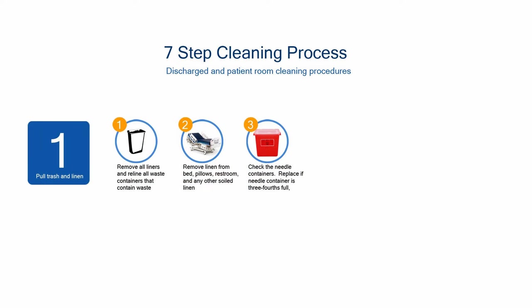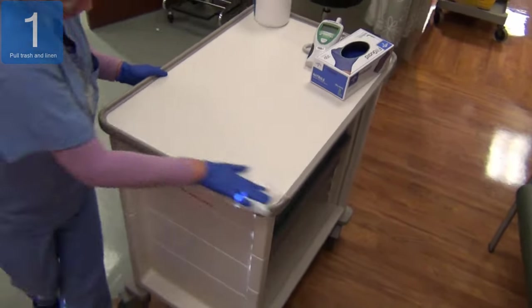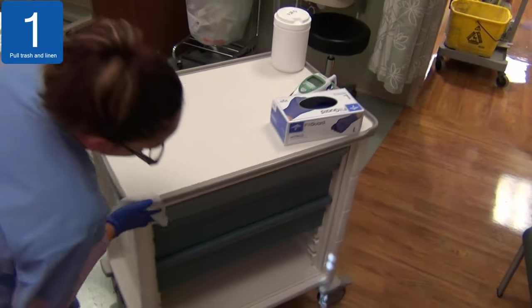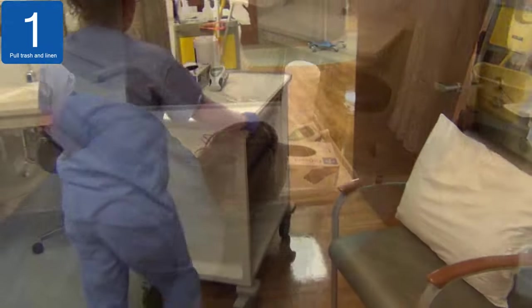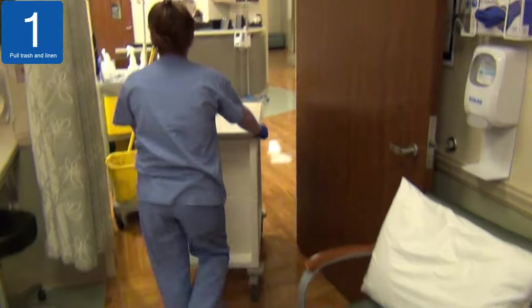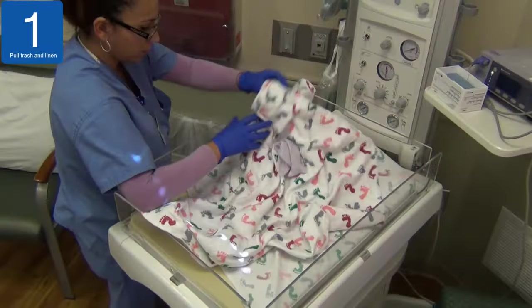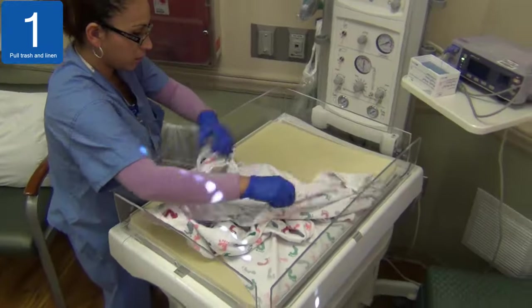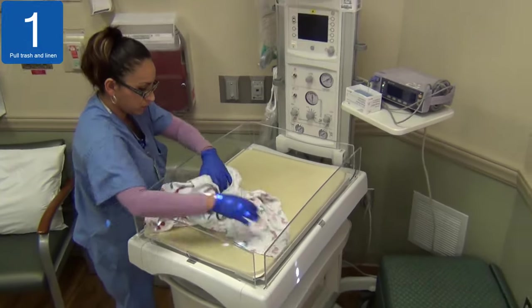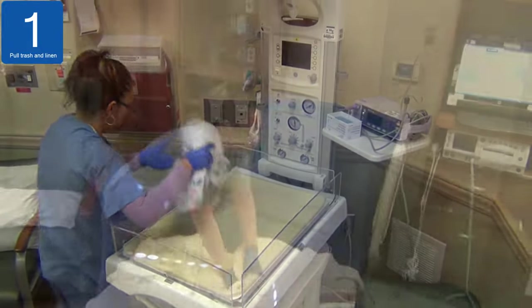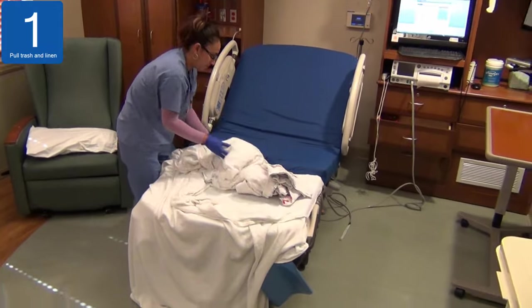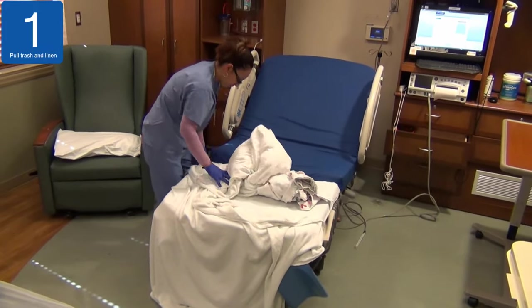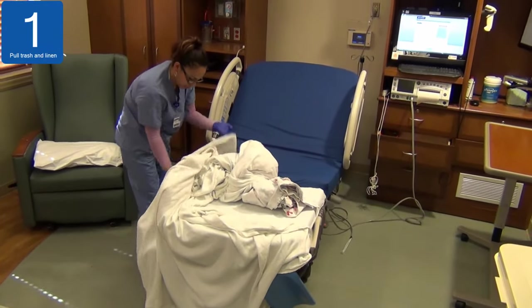Step 1: Pull trash and linen. Remove all liners and reline all waste containers that contain waste. Remove the soiled linen bag and collect linen from the room. Check the needle containers. If a needle container is three-fourths full, follow the facility's specific guidelines for replacing the needle box container.